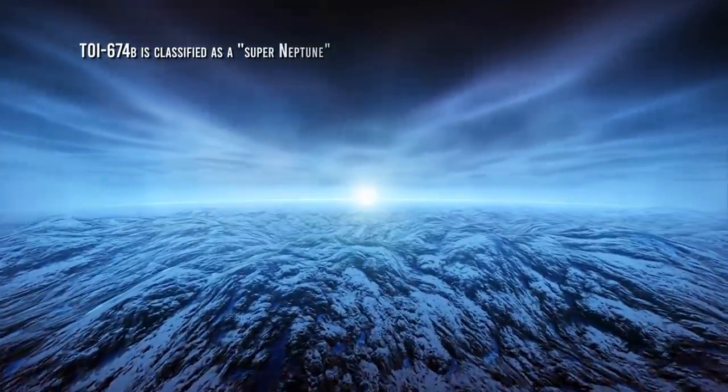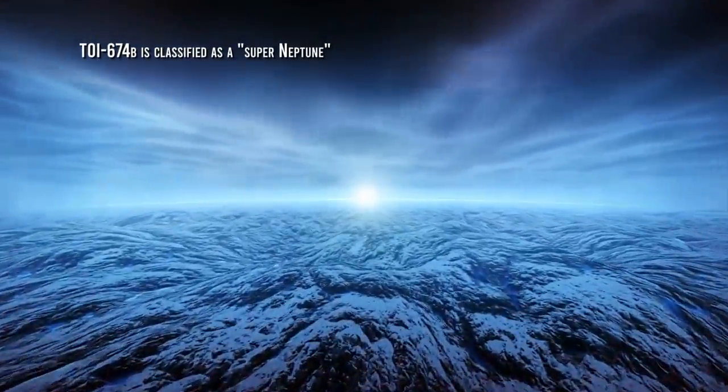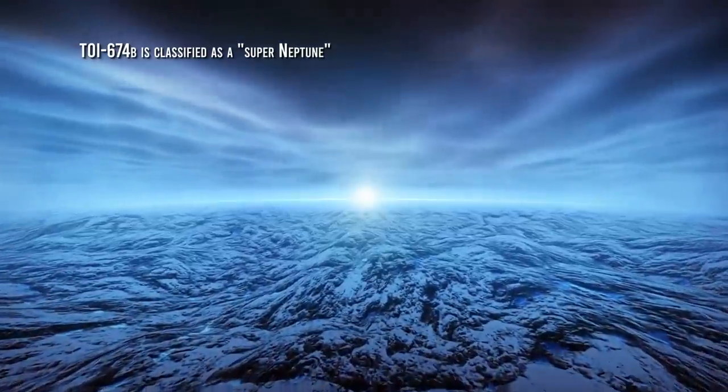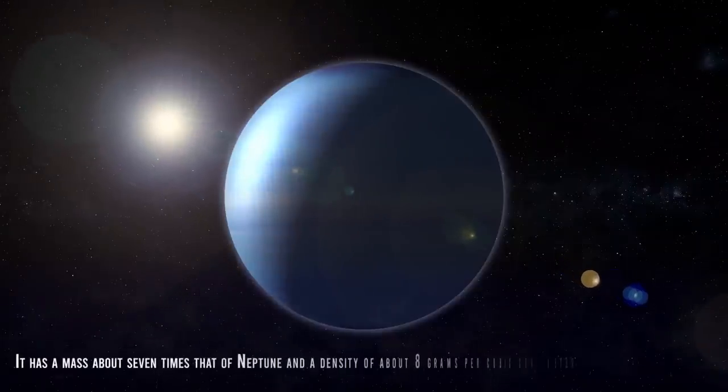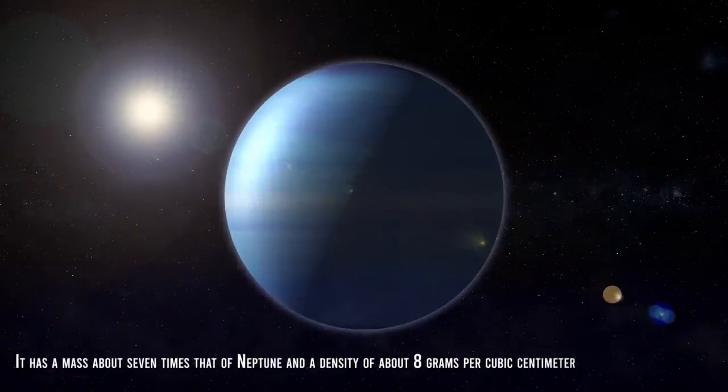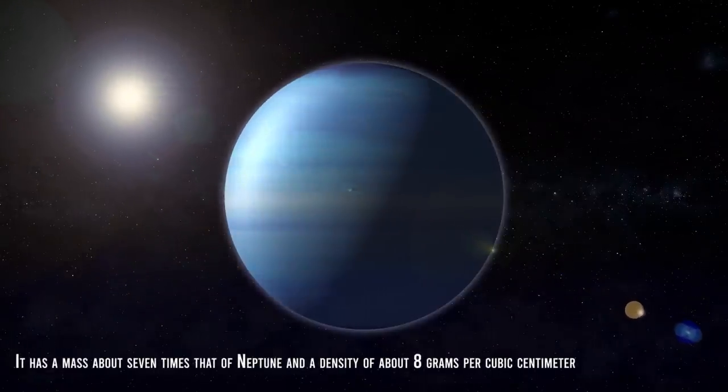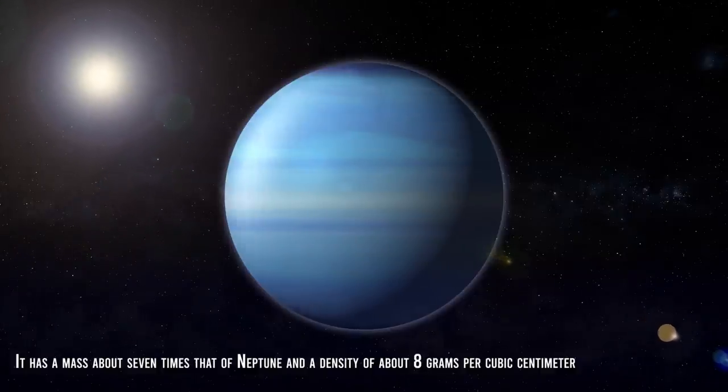TOI-674b is classified as a Super-Neptune, a type of exoplanet that is similar in size to Neptune but much denser. It has a mass about seven times that of Neptune and a density of about 8 grams per cubic centimeter, making it one of the densest known exoplanets.